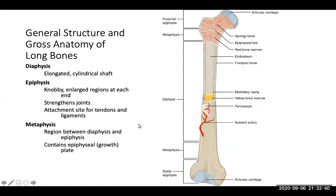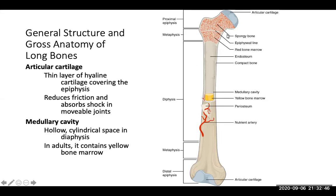The general structure and gross anatomy of long bones: articular cartilage is a thin layer of hyaline cartilage that covers the epiphysis regions — the ends of the bones. You have a proximal epiphysis close to the trunk attachment and a distal epiphysis further away. Articular cartilage reduces friction and absorbs shock in movable joints. The medullary cavity is a hollow cylindrical space within the diaphysis, the long shaft of the bone, and in adults it contains yellow bone marrow.